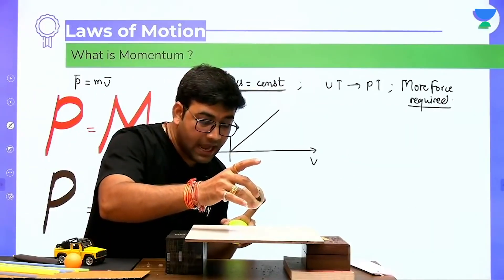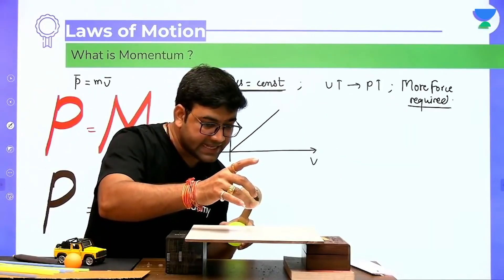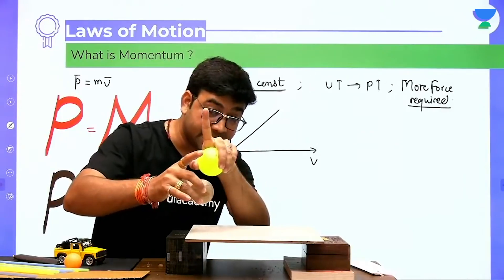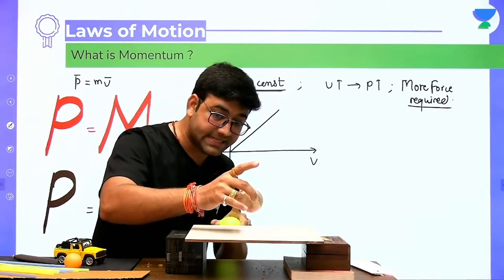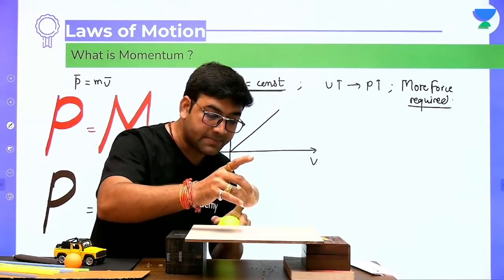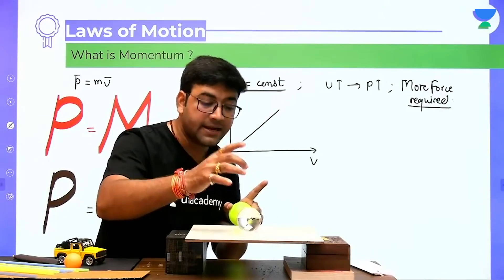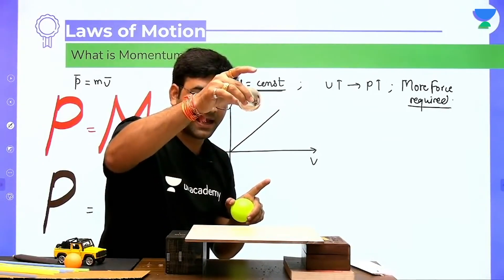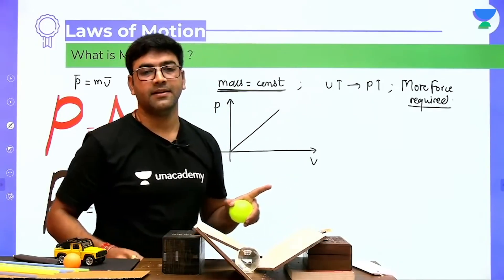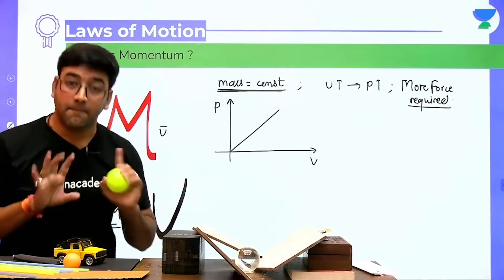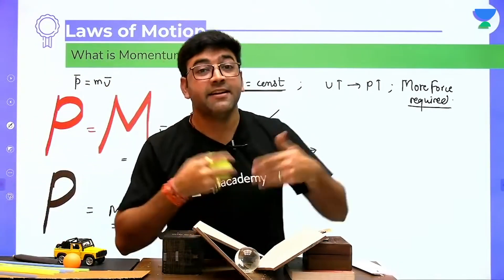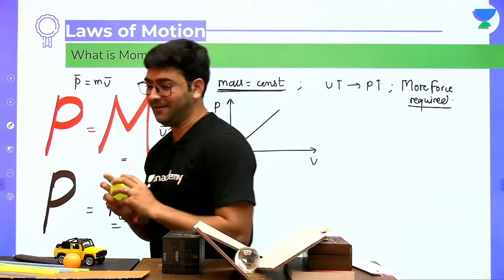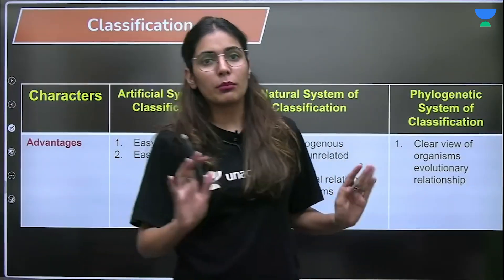If you look here, height is very less. Now, height is very less and mass here we keep the same. The tile is not breaking, but if you increase a little height, mass was the same. The height was the same, the velocity was the same, the momentum was the same.